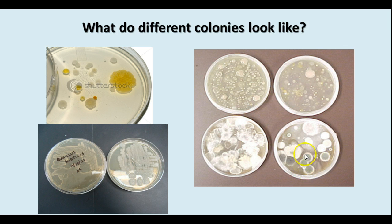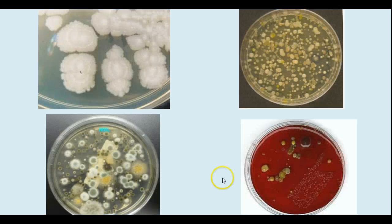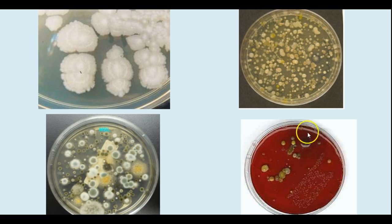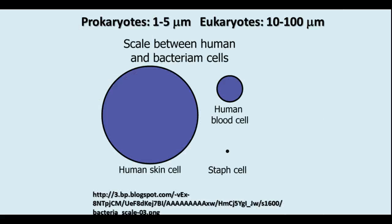Here you have some molds along with some bacteria. Different kinds of things that you see in the lab. This red agar here is called blood agar, and oftentimes that's used to see whether there is hemolytic action produced by the bacteria.